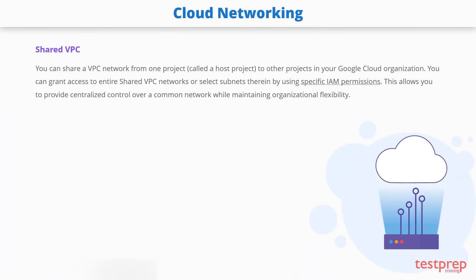Shared VPC. You can share a VPC network from one project, called a host project, to other projects in your Google Cloud organization. You can grant access to entire shared VPC networks, or select subnets therein by using specific IAM permissions. This allows you to provide centralized control over a common network, while maintaining organizational flexibility. Shared VPC is especially useful in large organizations.